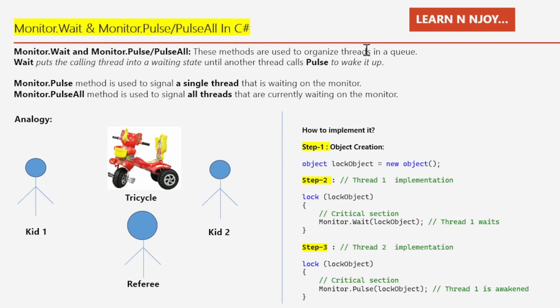Monitor.Wait and Monitor.Pulse are used to organize threads in a queue. Wait puts the calling thread into a waiting state until another thread calls Pulse to wake it up. There is a subtle difference: Monitor.Pulse signals a single waiting thread, whereas Monitor.PulseAll signals all threads that are currently waiting on the monitor.